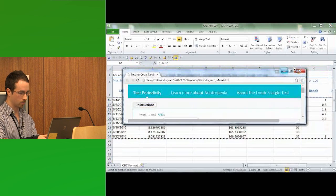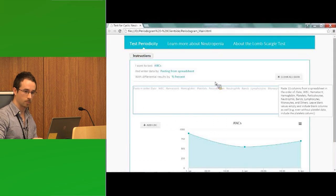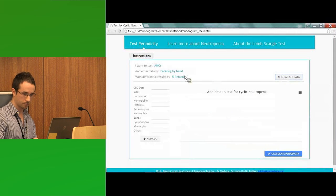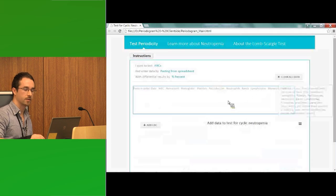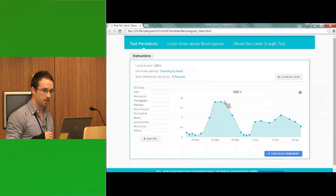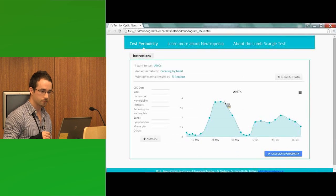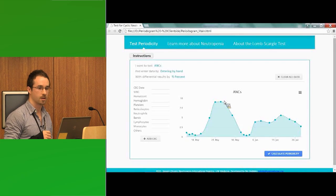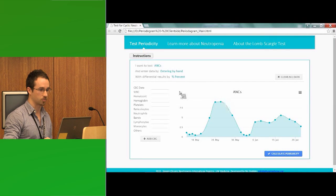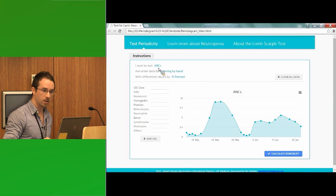I need to clear the sample data first. So we're looking at what's called the absolute neutrophil count. And this is what Dr. Dale mentioned, is looked at when we're testing for cyclic neutropenia.